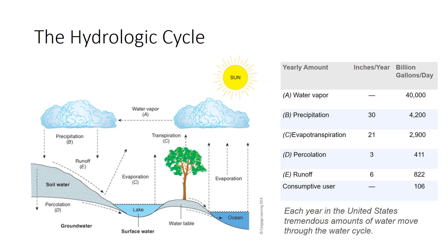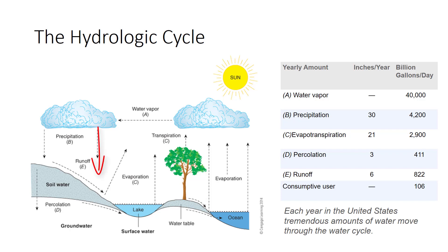It starts with the hydrologic or water cycle. The hydrologic cycle is an engine fueled by the sun's energy that transports water from the ocean to land and back again. Air moistened by evaporation from the surface of the ocean passes over continents, where it is shifted upward by warm air rising from the land mass. When moist air has risen high enough, water vapor condenses into precipitation — rain, snow, and hail.